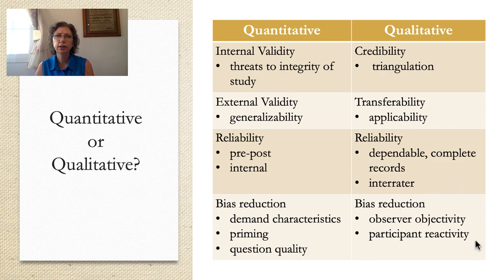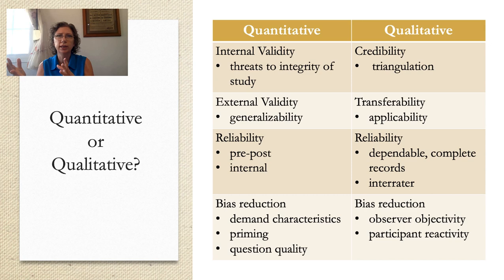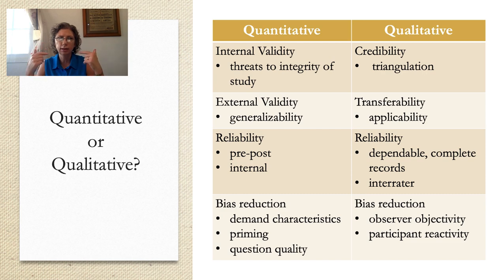Bias reduction in qualitative research means the observer needs to stay objective regardless of how much they know about the situation. They must not project or look for something specific. For example, if observers watching a playground are looking for bullying behaviors but already have a bias based on gender roles, they might let that seep in — noticing when girls get bullying but not when boys do, because it's not in line with their expectations. Observer objectivity means being super mindful of exactly what behaviors you're looking for and not falling into the bias of only seeing what you expect to see.